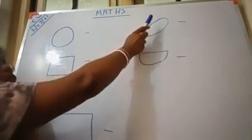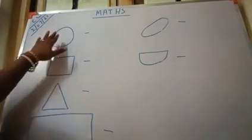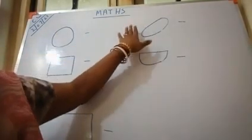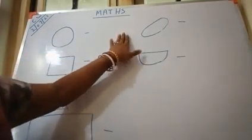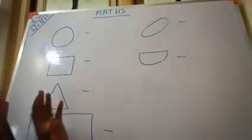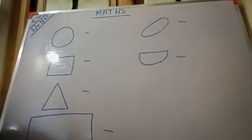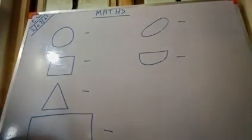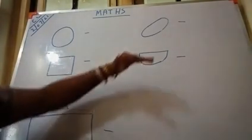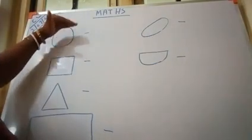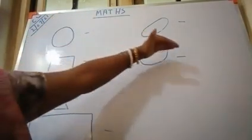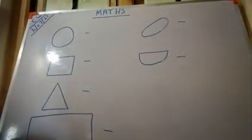This is oval. It is not round like a circle, but it also has no sides and no corners. It is oval in shape. A fine example of oval is an egg — an egg is oval in shape. And this is half circle — it is half of a circle.